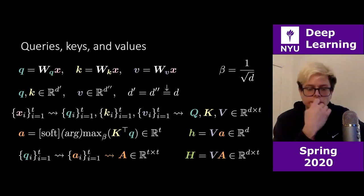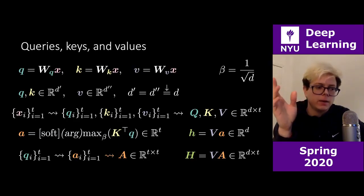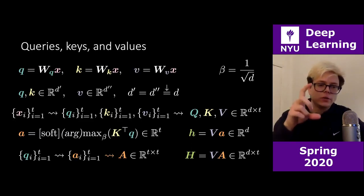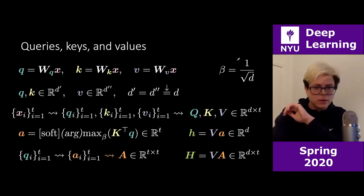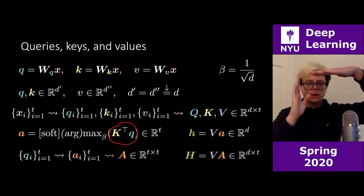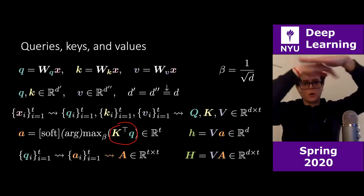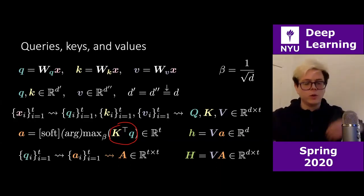Q and K need the same dimension because you're comparing them — checking alignment between query and key requires the same vector space. V is the content (the recipe), which can be longer. The dot product between query and keys gives the scores; after soft argmax, you retrieve the value as the weighted combination.